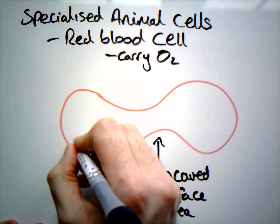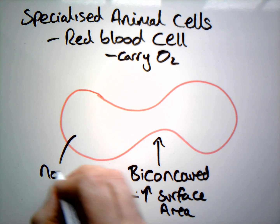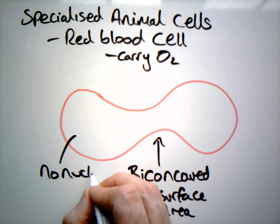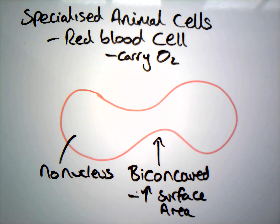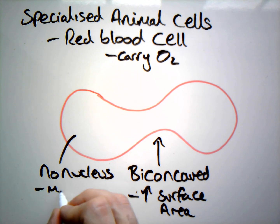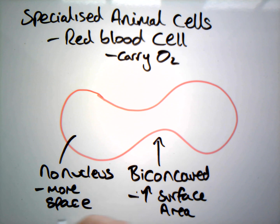Another key feature of our red blood cells is that it is one of the very few, if not the only, animal cell that has no nucleus, and again that creates more space for more oxygen.